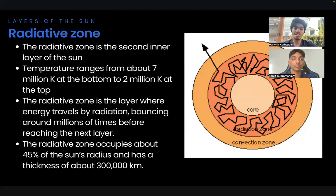The radiative zone occupies about 45 percent of the Sun's radius and has a thickness of about 300,000 kilometers. The radiative zone is the layer where energy travels by radiation, bouncing around millions of times before reaching the next layer. The radiative zone is also composed of plasma, but less dense than in the core.